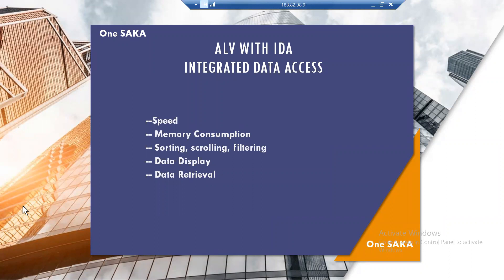The first difference is speed. With ALV IDA, it is much faster than normal ALV. In normal ALV, we retrieve all the data, build the catalog, and show the ALV — the entire data is fetched and kept in an internal table. But with ALV IDA, we only fetch the records that fit into the visible area. So as we fetch fewer records, it is faster.